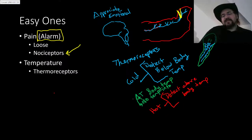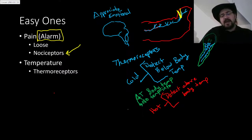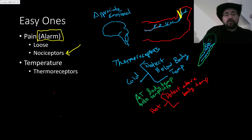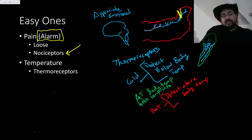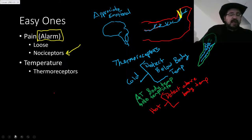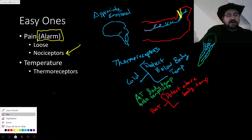If you have a chance, mess with your sink. Turn the heat on, turn the cold on, and find the right combination that gets to your body temperature. Lukewarm is near there but still above. Get to your body temperature and you will not receive any temperature information. It's really cool.